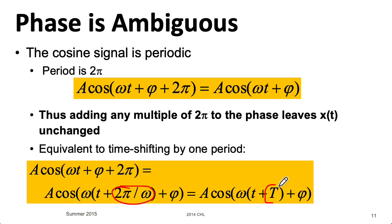And this 2π over omega, well, that's just my capital T, my period. So a phase of 2π corresponds to a time shift of a period T. So that addition of 2π doesn't change anything.